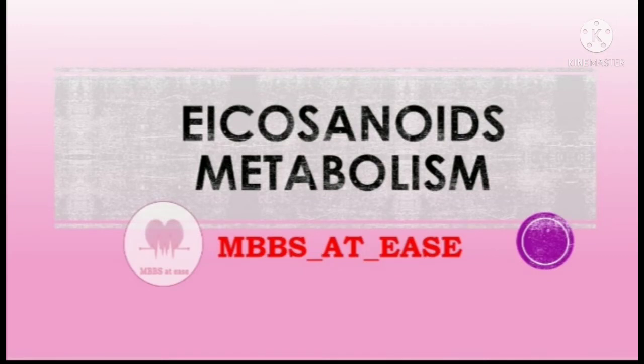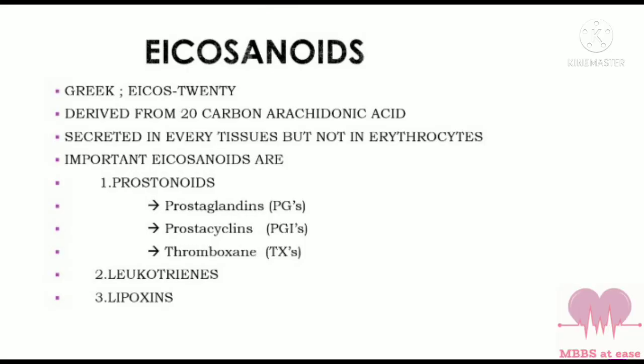Hello everyone, welcome back to our channel MBBS at Ease. In this video you will be learning about eicosanoids metabolism. Eicosanoids are derived from 20-carbon arachidonic acid; in fact, in Greek 'eicos' means 20.